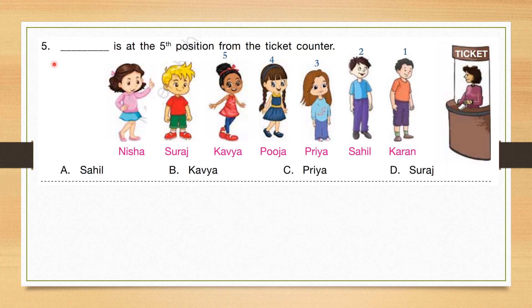Question number 5: Blank is the fifth position from the ticket counter. Counting positions: first, second, third, fourth, fifth — Caveat is at the fifth position from the ticket counter. So the correct answer is option B.